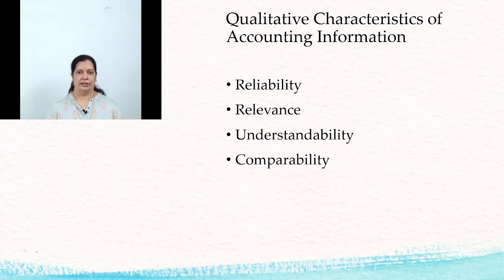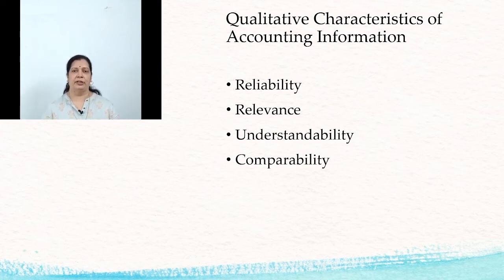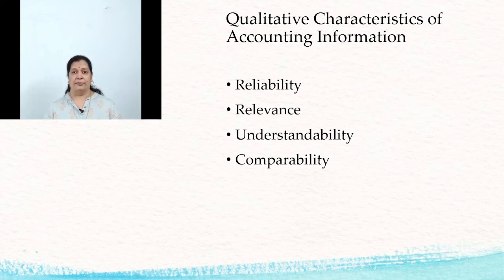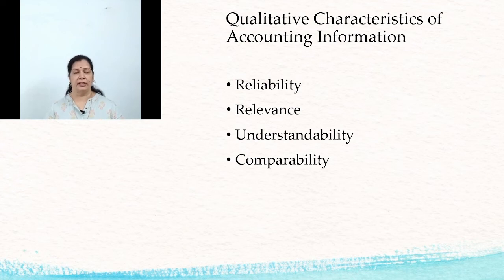The next topic is qualitative characteristics of accounting information. The first is reliability, which means the information is reliable, verifiable, and free from any bias. The second is relevance, meaning the accounting information meets the needs of users and is useful for their decision-making. The third is understandability, meaning the accounting information is presented in a form that can be easily understood by the users.